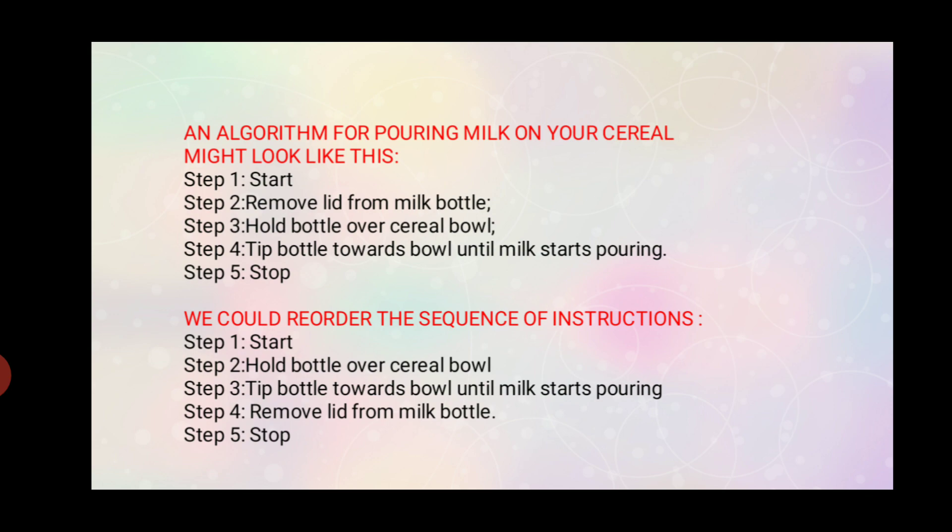If you are performing this task in the wrong order—first hold bottle over cereal bowl, then tip bottle towards bowl until milk starts pouring, and only then removing the lid—that is the wrong way to pour milk. If you are doing the task in wrong order, you will get the wrong output.